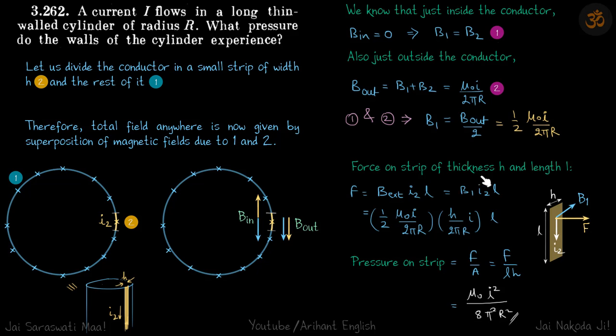Now, force on the strip of thickness h and length l. The thickness is h and let's take length l of this strip. The force will be B₁I₂L, where I₂ is the current flowing through the strip.